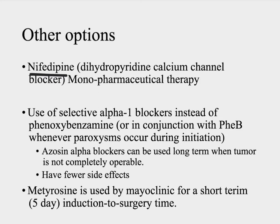When using nifedipine as monotherapy, you can still have increased cardiac contractility — inotropy and chronotropy — which may actually be helpful if you have a cardiomyopathy like in our case. The catecholamines have caused the dilated cardiomyopathy, so you can keep your cardiac output up in situations where you wouldn't be able to if you were using a beta blocker. Another option is to use alpha-1 selective drugs instead of phenoxybenzamine. You can use them as your primary pharmaceutical, or use them with phenoxybenzamine during the loading phase to deal with paroxysms of hypertension during that seven to ten day phase.